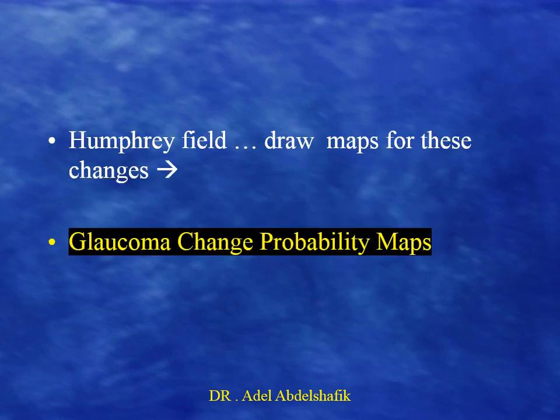Humphrey repeated the same analysis on a large number of glaucoma patients and drew maps of these changes. This is known as the glaucoma change probability maps. These are used to compare fluctuation and determine whether a change from one test to another is acceptable as fluctuation or represents true progression of the visual field.